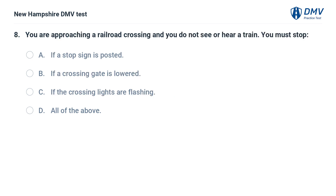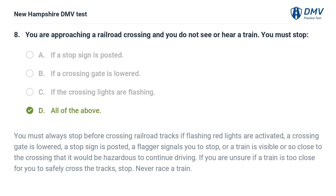You are approaching a railroad crossing and you do not see or hear a train. You must stop if: A) a stop sign is posted, B) a crossing gate is lowered, C) the crossing lights are flashing, D) all of the above. The answer is D. You must always stop before crossing railroad tracks if flashing red lights are activated, a crossing gate is lowered, a stop sign is posted, a flagger signals you to stop, or a train is visible or so close to the crossing that it would be hazardous to continue. If you are unsure, stop — never race a train.